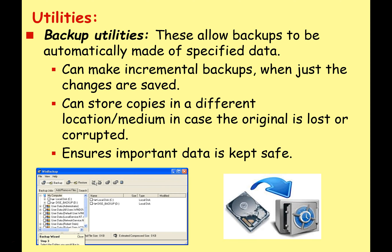Backup utilities are really important, especially for businesses and large enterprises, as they allow backups to be automatically made of specified data. You can make incremental backups — where only the changes since the previous backup are saved — or full backups of everything each time. Copies can be stored in a different location or on a different medium in case the original is lost or corrupted. Cloud storage is important here, as data can be stored anywhere in the world to ensure important data is kept safe and can be restored in case of disaster.